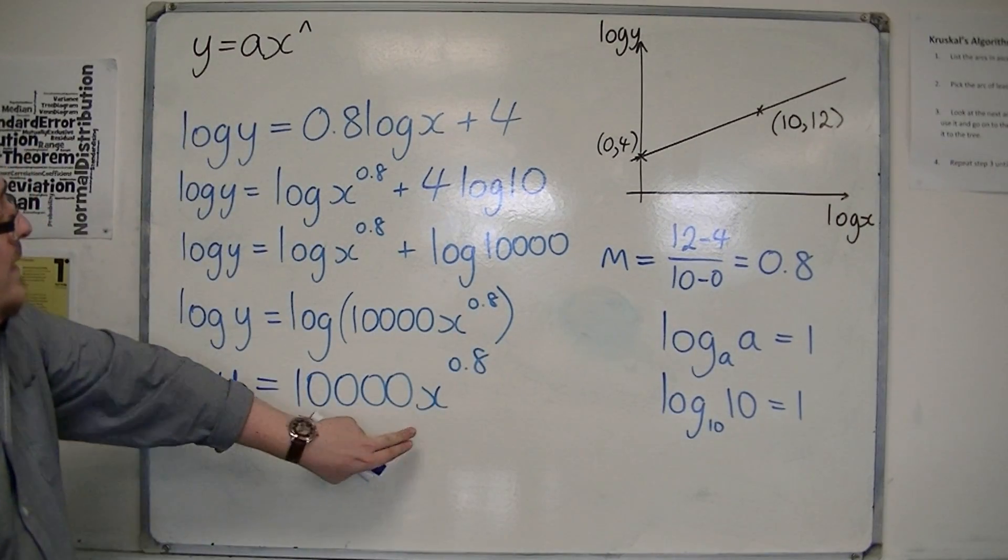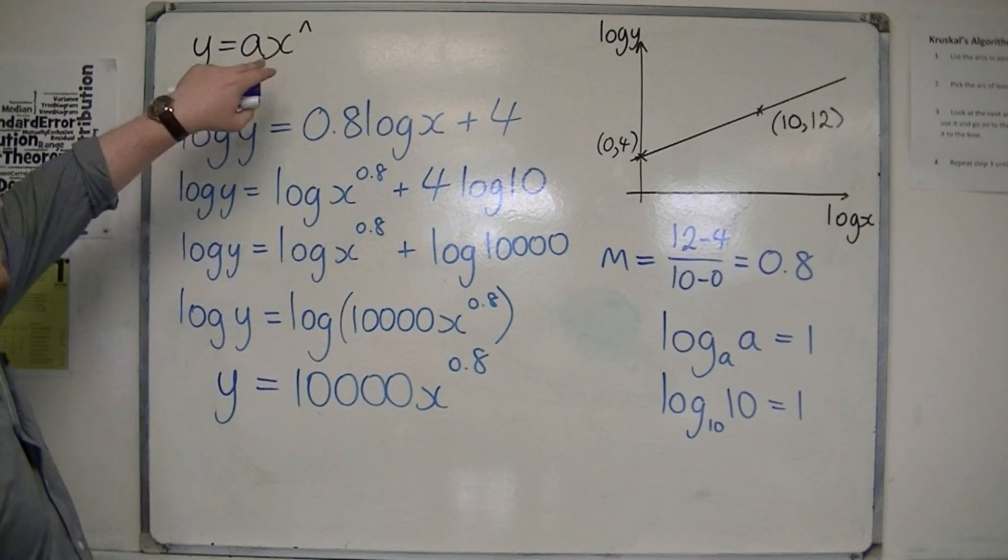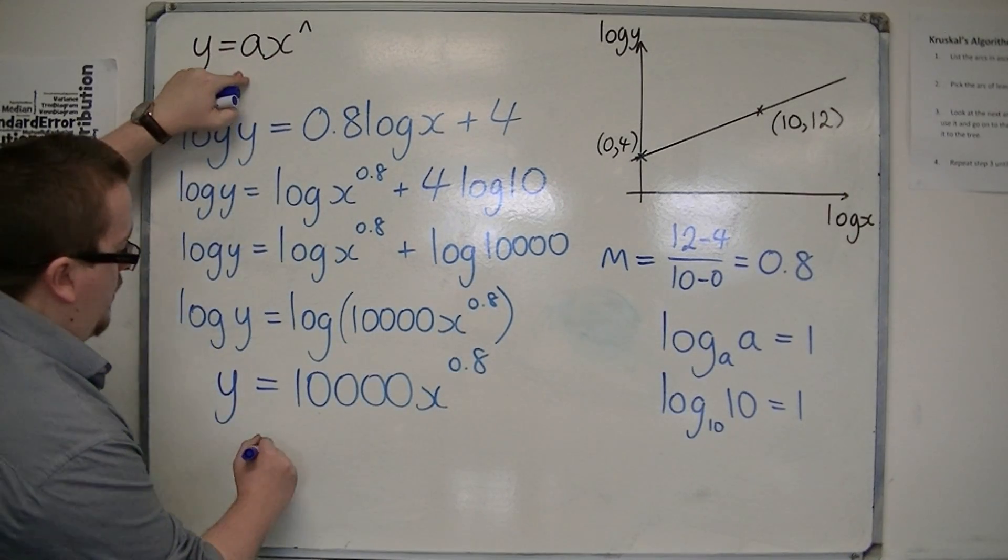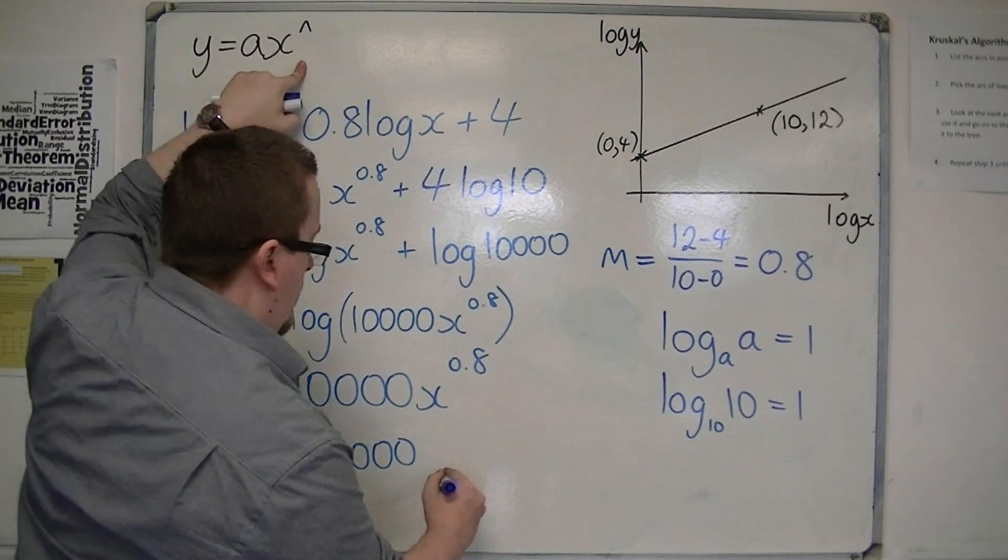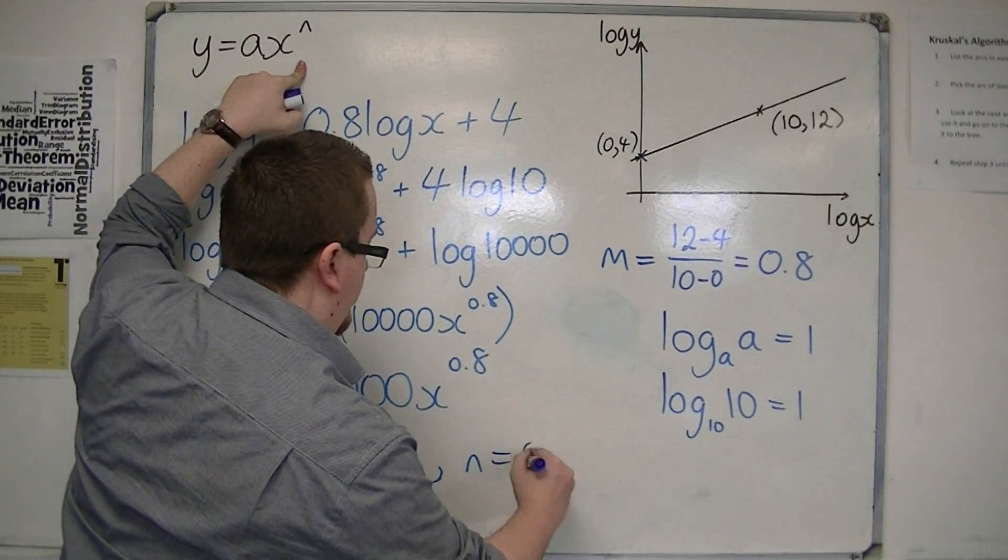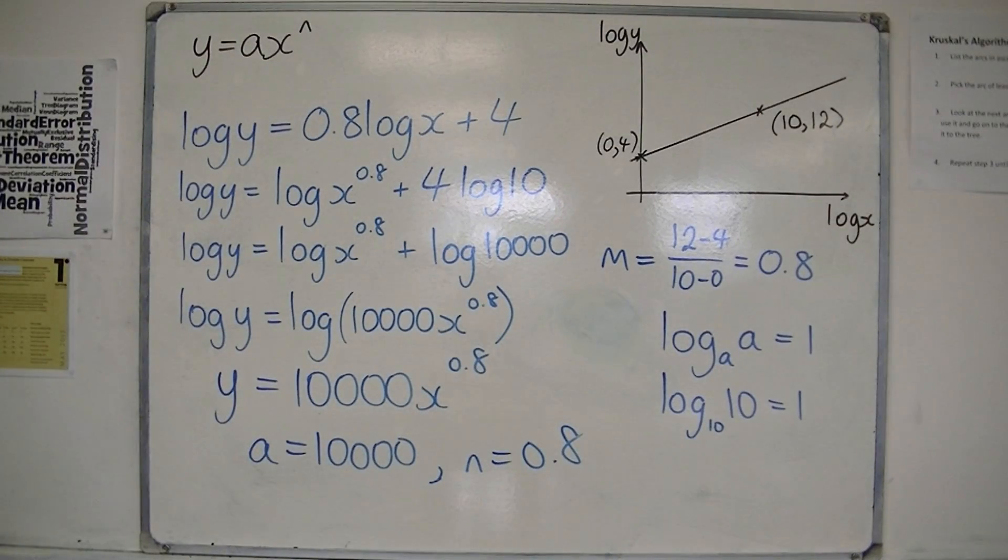So, therefore, this is what I wanted. The a value is the 10,000, and the n is 0.8. Now, I've written it in the format that we wanted.